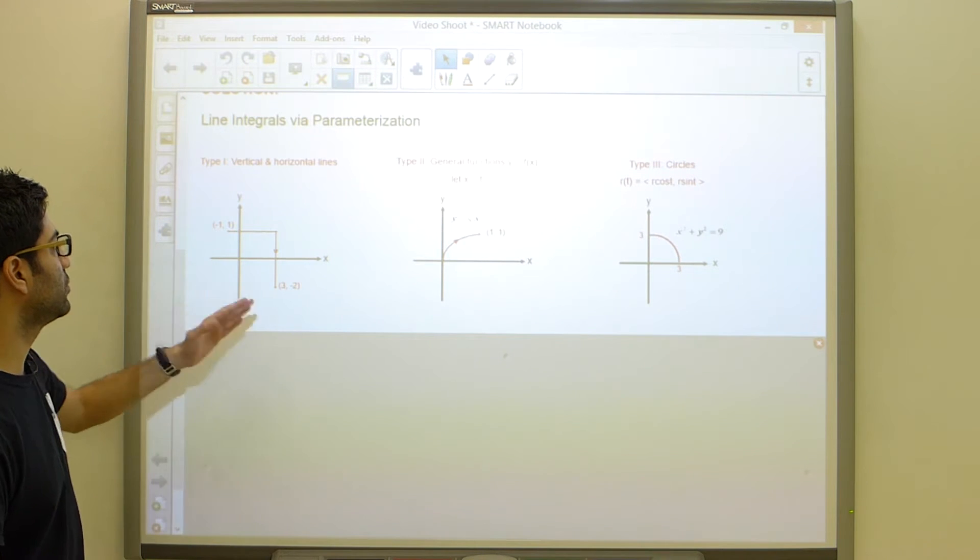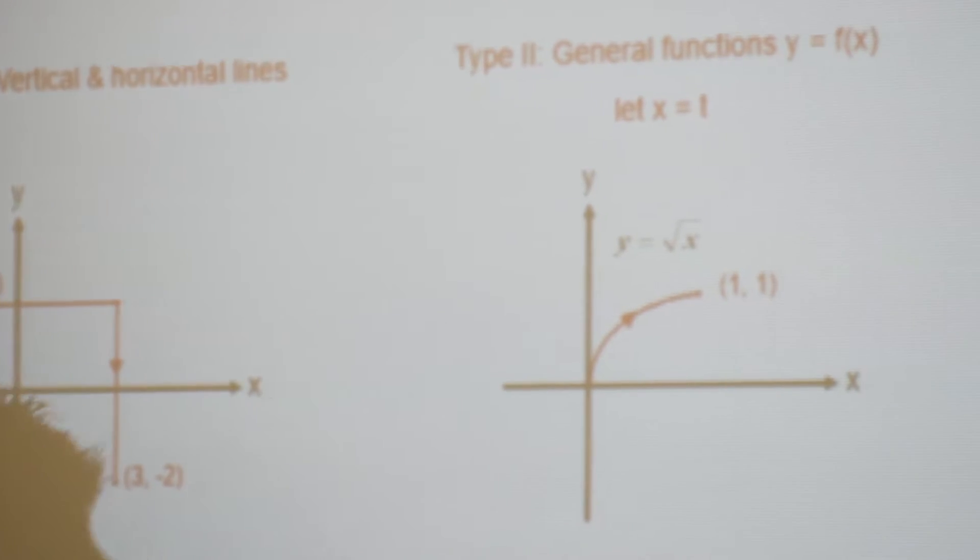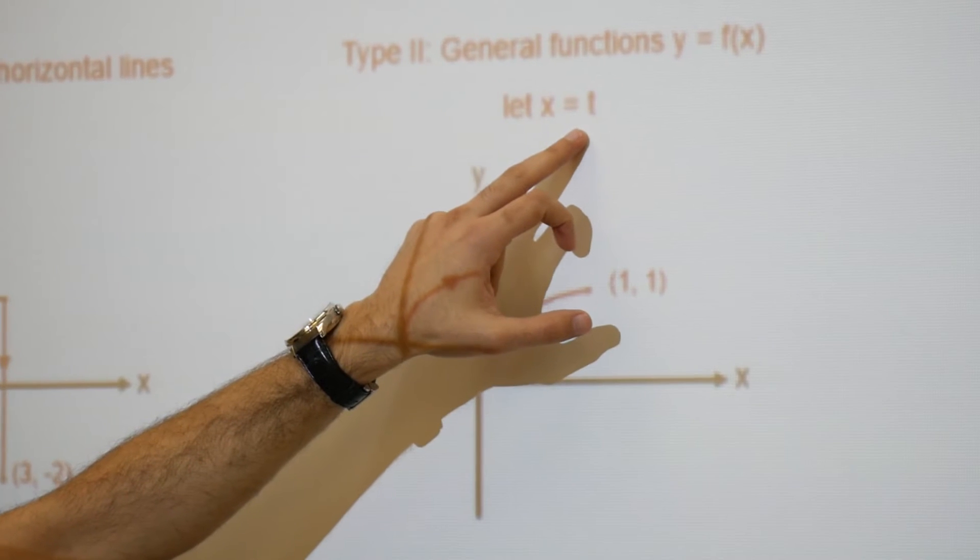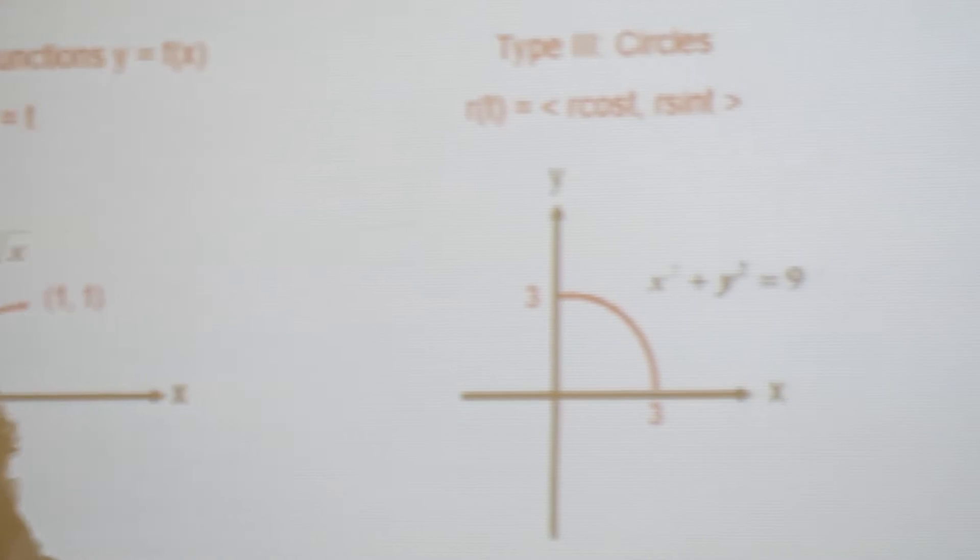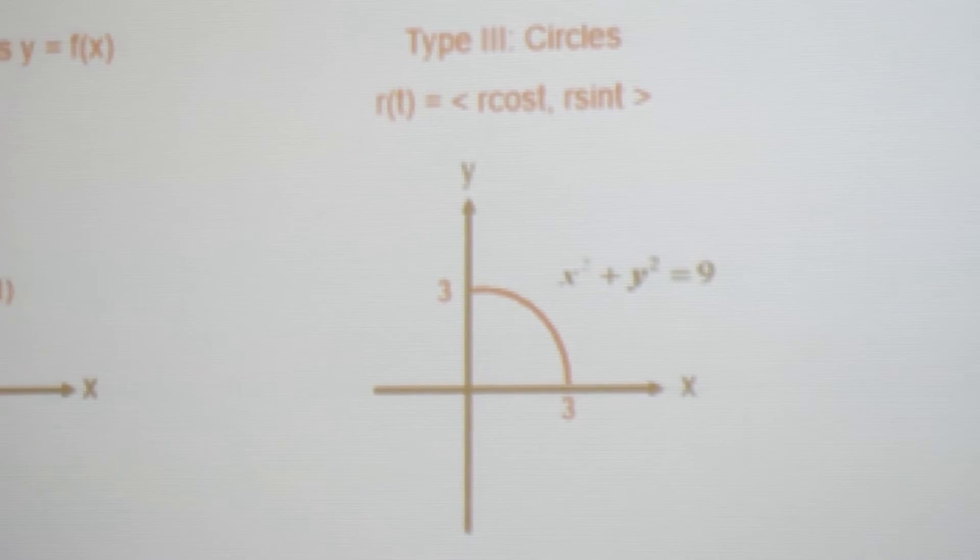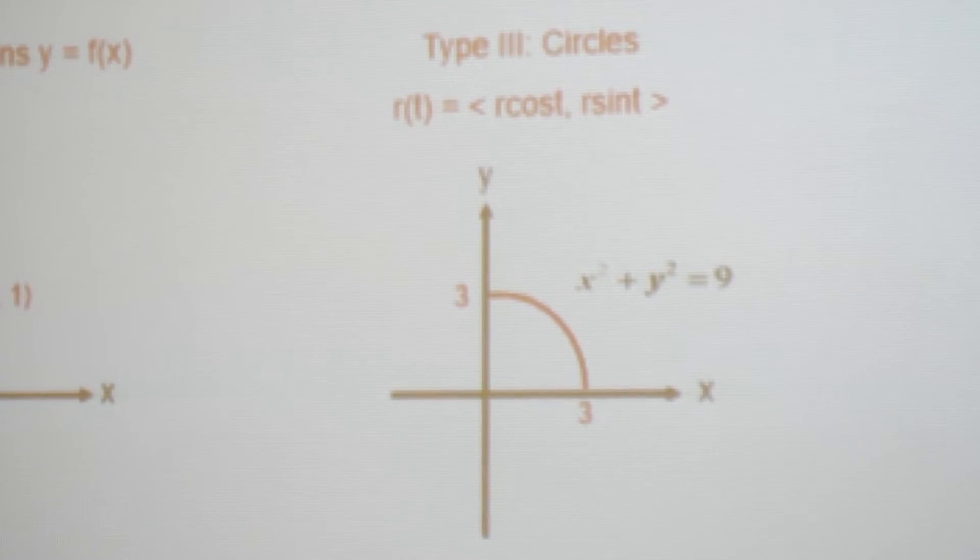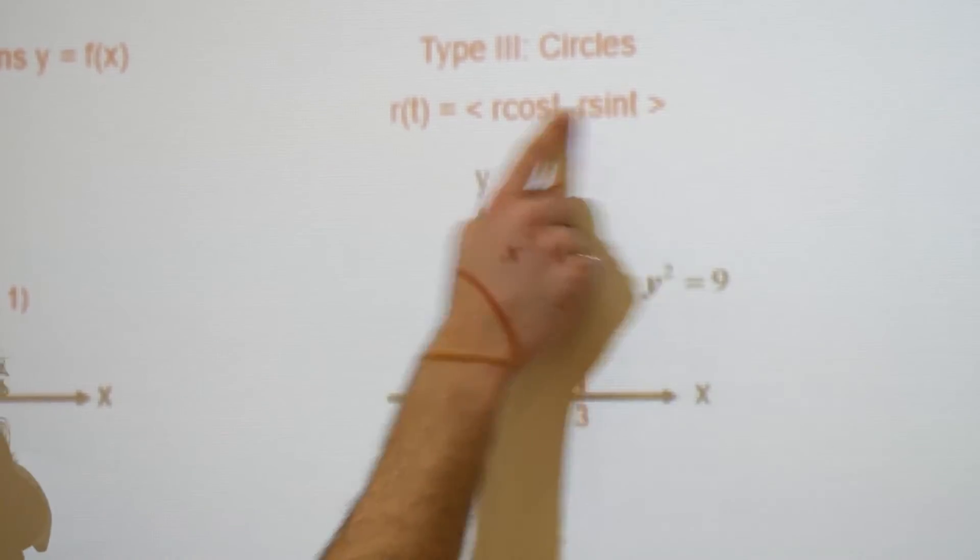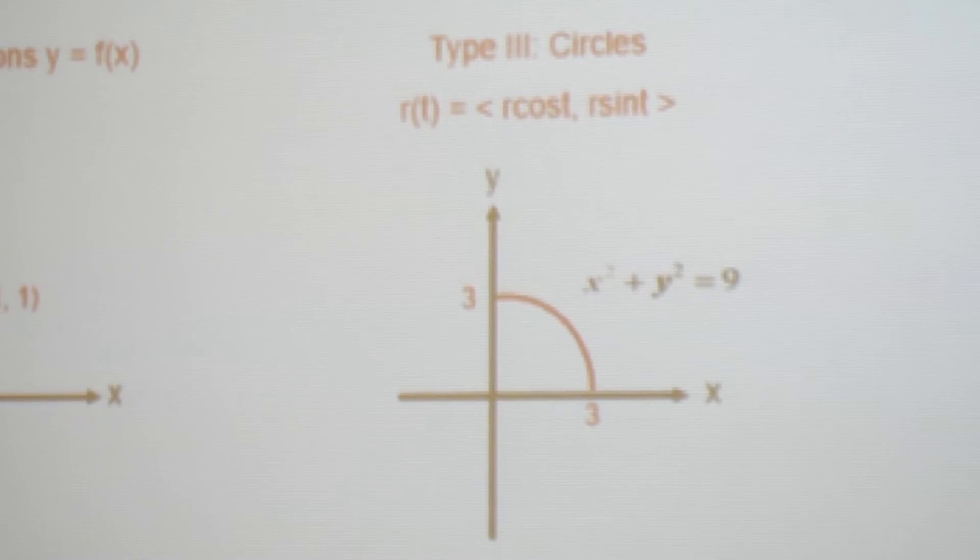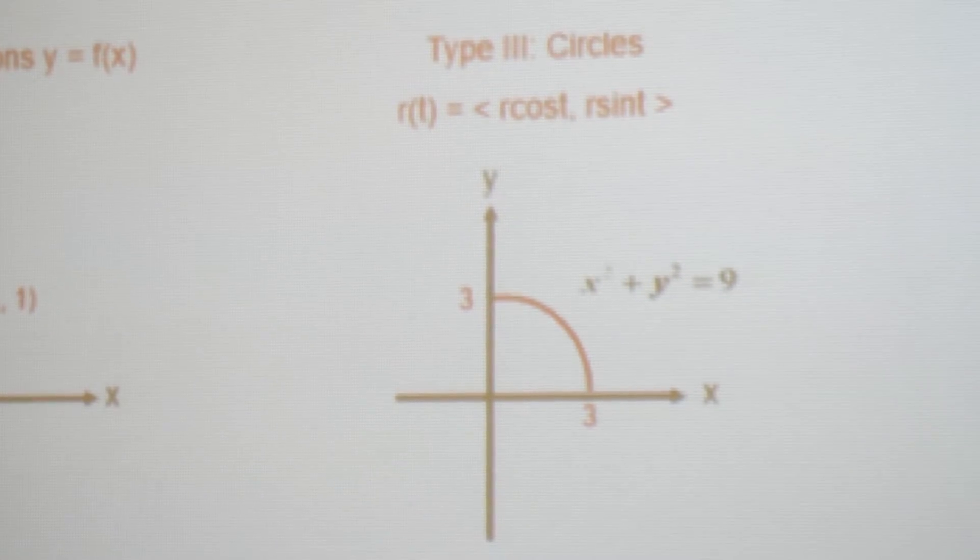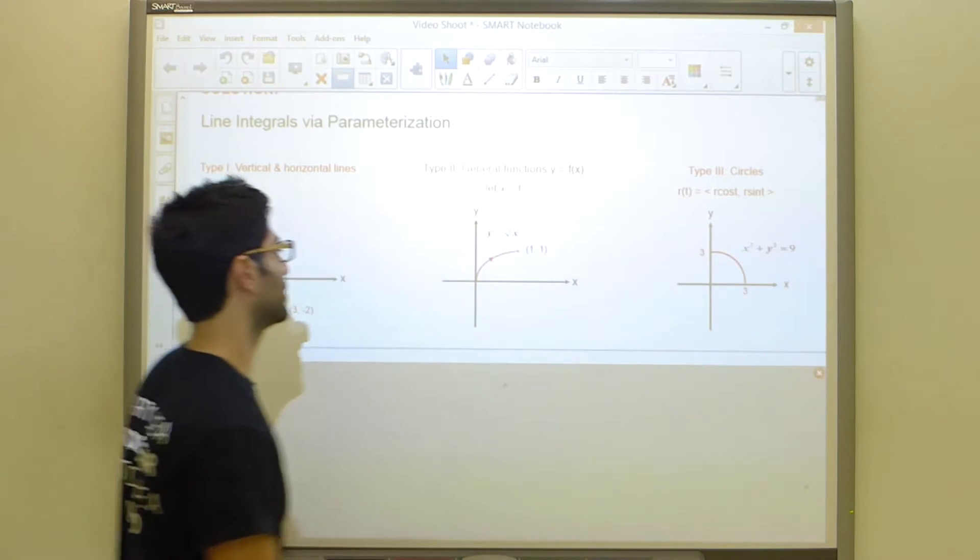So there are three different types of functions that I would like to teach you to parameterize. The first one is how to tackle horizontal and vertical lines. Type 2 would be just general functions and the way we're going to parameterize this is just simply to let x equal to t. And then our third type is how to deal with circles specifically. So when you have a circle, as we do over here, we should just kind of memorize that our parameterization is going to take on this form, r of t is equal to r cos t and r sin t.